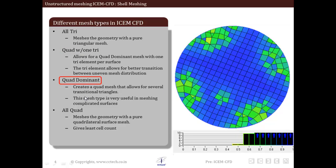Next is quad dominant. This type of mesh has mostly quad mesh that allows for several transitional triangles, which means the majority of the mesh will be quadrilateral but some elements can be triangular to ensure smooth transitions between uneven mesh regions. This is usually very useful in meshing complicated surfaces.